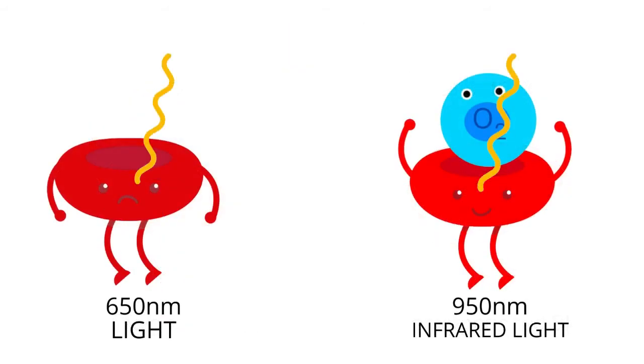You probably know that each color we see refers to a particular wavelength of light. For example, blue light has a wavelength of around 400 nanometers. The red color of deoxygenated blood absorbs 650 nanometer light. The oxygenated blood, which has a different shade of color, absorbs 950 nanometer light. This falls under the infrared light.